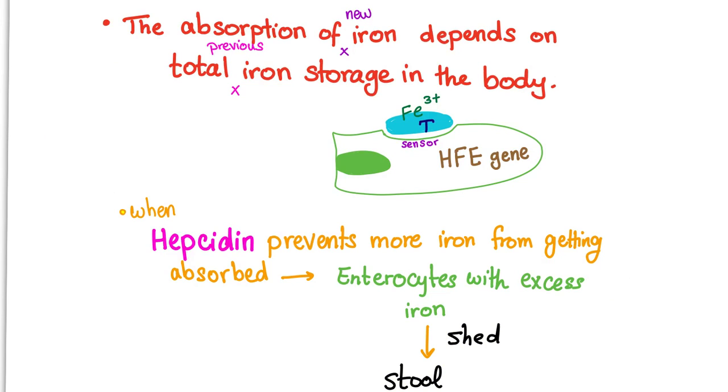We have said before that iron gets absorbed in the duodenum, the enterocyte. It has a sensor. Why? Because the absorption of new iron depends on the total previous iron storage in the body. It's heavily regulated. It has a sensor to sense the transferrin carrying iron. The HFE gene helps this enterocyte get activated and absorb iron in the ferrous state. Remember, when hepcidin prevents more iron from getting absorbed, there is only one way for iron to get shed with the enterocyte in the stool. If hepcidin shuts the gate, I have only one option: to be stored as ferritin and get shed in the stool.